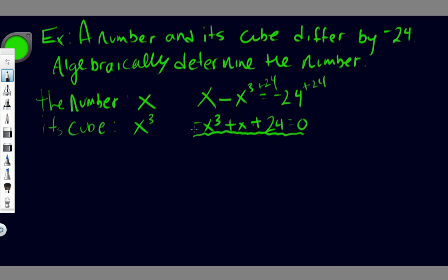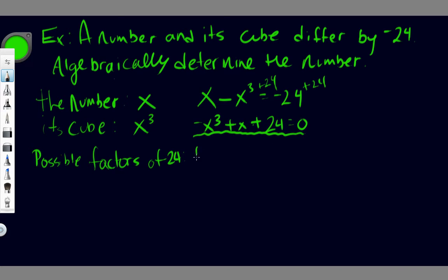Now I have to solve this cubic by some method. The only method my students know that works for pretty much any cubic is the integral zero theorem. With the integral zero theorem, we find all possible factors of 24 — the constant of the equation. So the possible values are plus or minus 1, 2, 3, 4, 6, 8, 12, and 24.